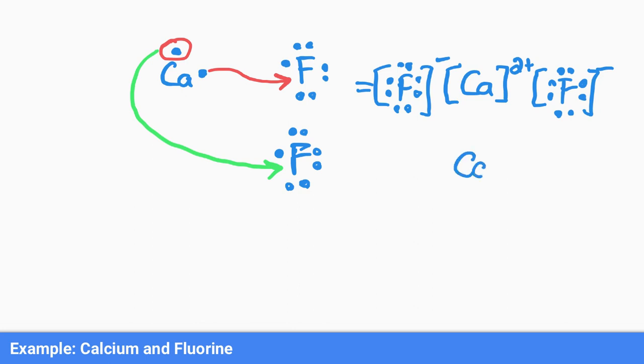Or you could also draw it as Ca with a two plus, and then we could say we have two fluorines with a negative charge. So a couple ways you can represent that.